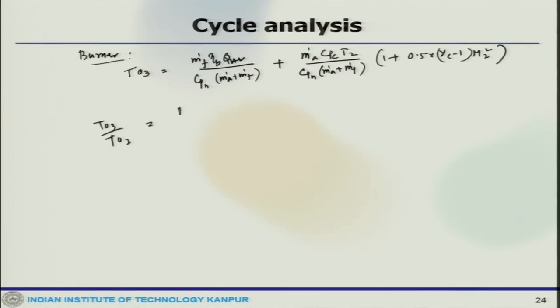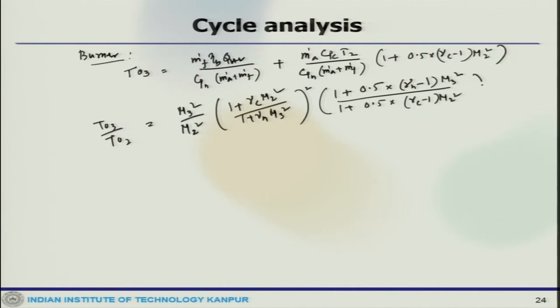T03 by T02 would be M3 square by M2 square, times 1 plus 0.5 into gamma_H minus 1 M3 square divided by 0.5 into gamma_C minus 1. And P3 equals to P2 times 1 plus gamma_C M2 square minus gamma_H M3 square divided by gamma_C plus 1. And T3 equals to T03 divided by 1 plus 0.5 gamma_H minus 1 M3 square.